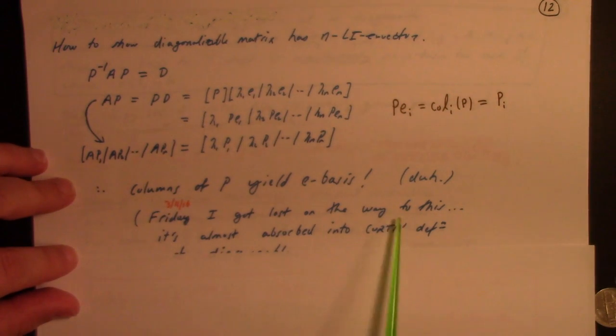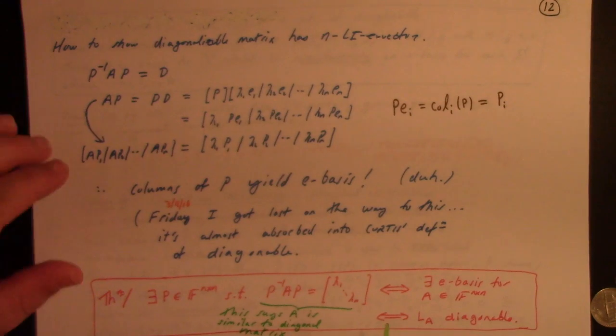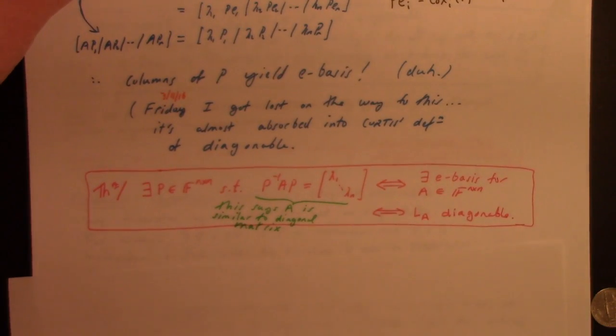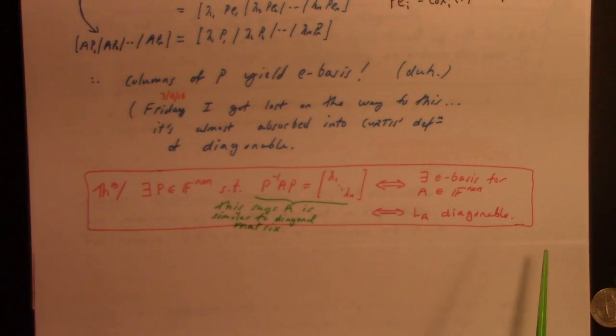So, again, March 11th, 2016, I got lost on the way to this. It's almost absorbed into Curtis's definition of diagonal, this here. But anyway, here's something for your reference. There exists P in the N by N matrices of F, such that P inverse AP is equal to this diagonal matrix. In other words, what I'm saying is A is similar to the diagonal matrix with lambda 1 through lambda n on the diagonal, if and only if there exists an eigenbasis for A in the N by N matrices over F, which is true if and only if LA is diagonalizable.